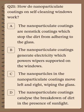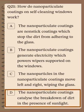Question number 21: How do nanoparticulate coatings on self-cleaning windows work? Each substance on the nanoscale has a new or unique property. A glass coated with nano substance will not get dirty and is self-cleaning — nothing adheres to the glass. The nanoparticulate coating catalyzes the breakdown of dirt in the presence of sunlight, so any dirty material is broken down due to the nanoparticulate coating.